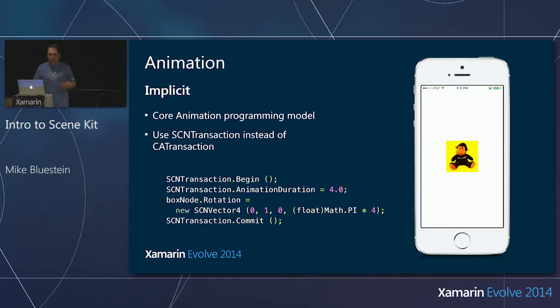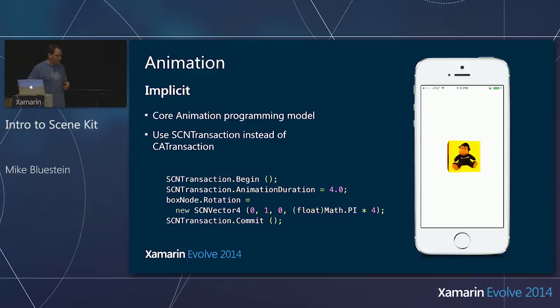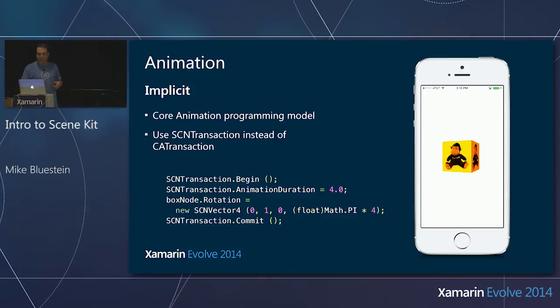The one thing different: where in a regular app with Core Animation you would have changed the CA layer, here you're setting it on the node. Same exact programming model for implicit animations, just using this different class. And I rotated it about the y-axis.